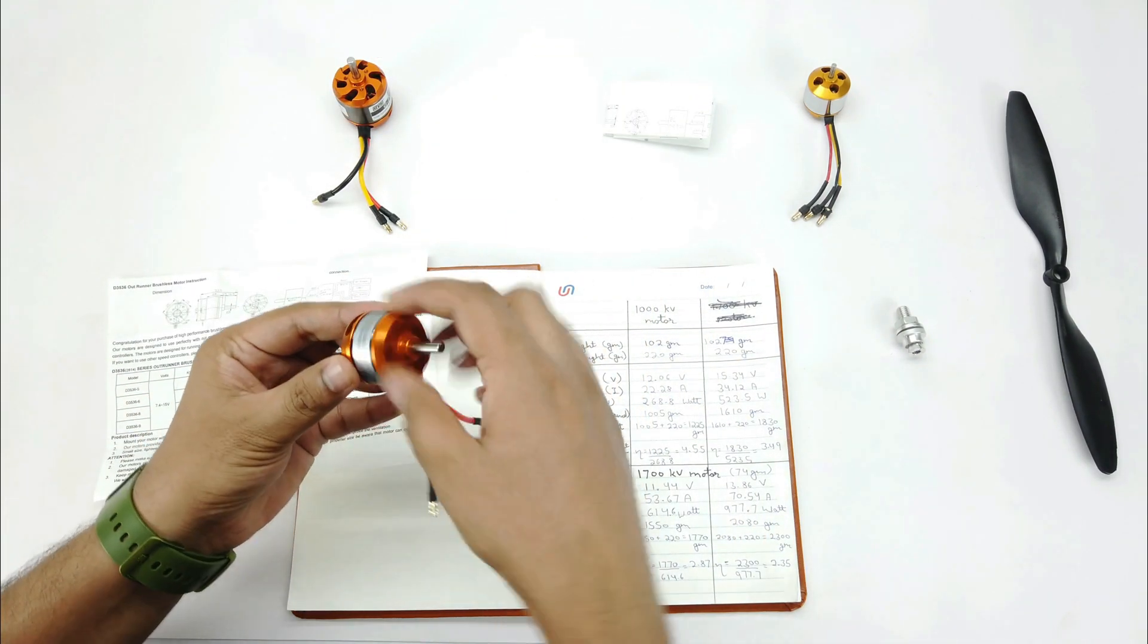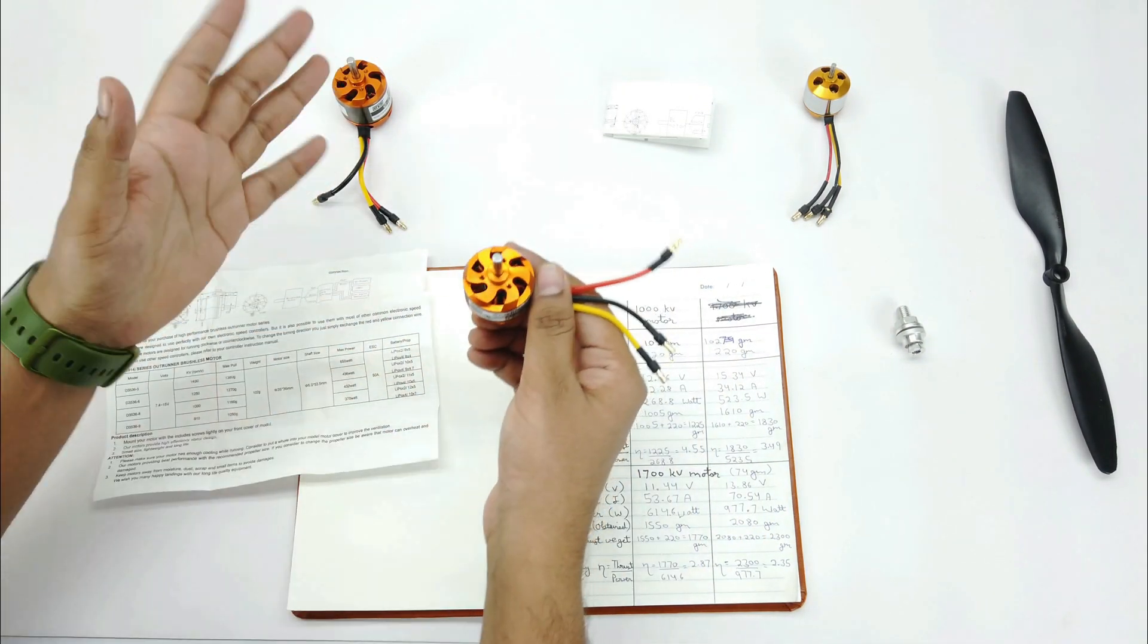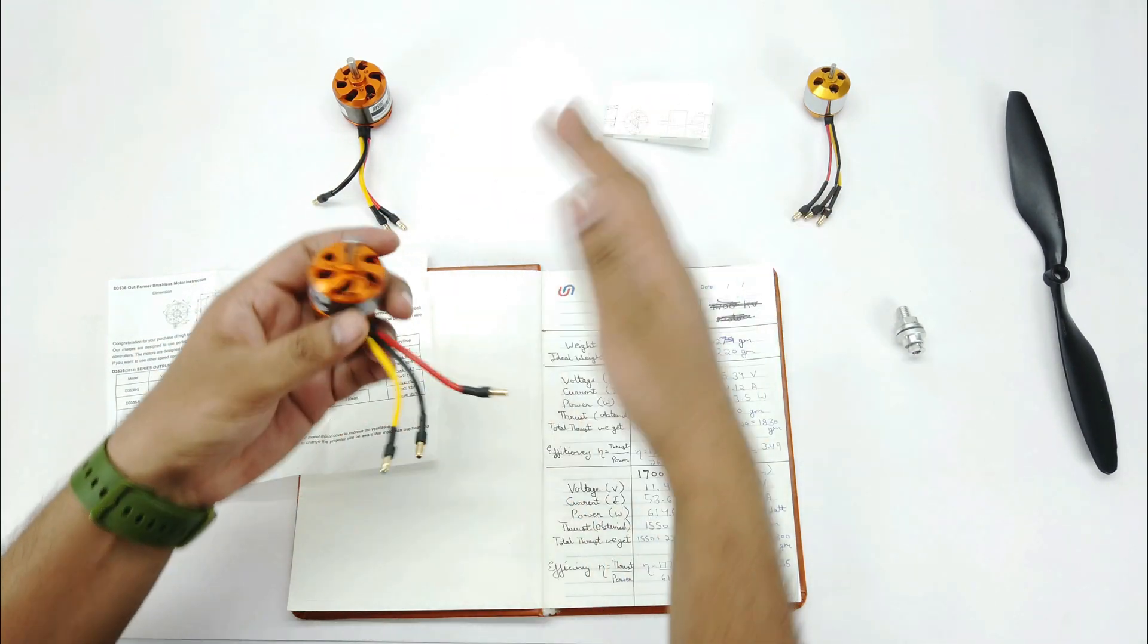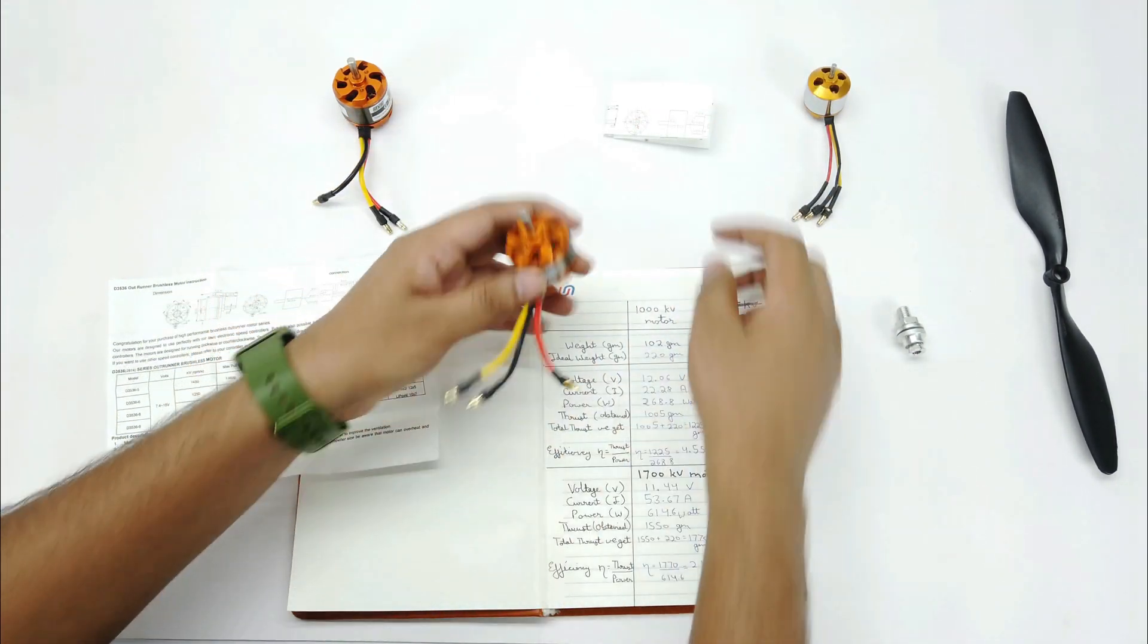Let's talk about the 1700kV motor. No doubt it was very fast and in the second configuration when connected to a 4S battery, it produced a lot of thrust and the whole thing moved.